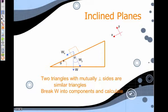Since these are two triangles with mutually parallel or perpendicular sides, similar triangles, you're going to break them into components and calculate. So this angle right here and this angle right here are going to be equal to each other.